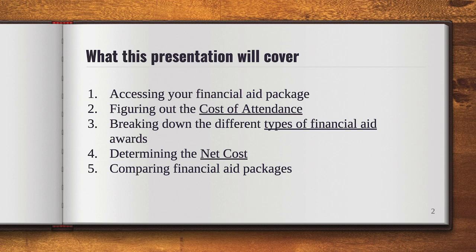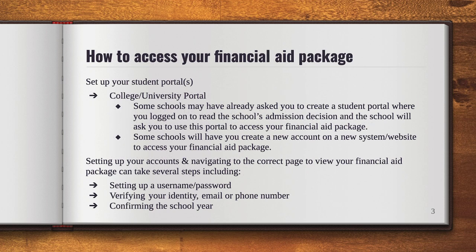Finally, we're going to talk about how to compare your different financial aid packages. To access your financial aid package, you're most likely going to create a student portal, and this is going to be done for every university that you get accepted to. Some universities may have already had you create a student portal when you applied. If not, when you get your acceptance they will send you identification information and ask you to log on to their student portal. It's going to take a while — you'll need to create a username and password and verify your identity.